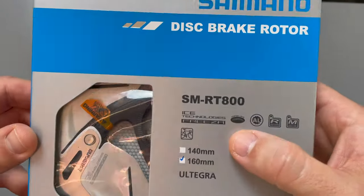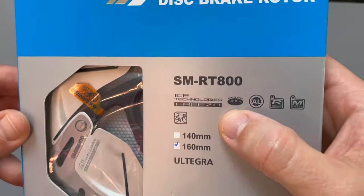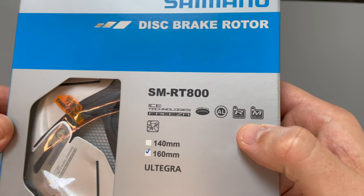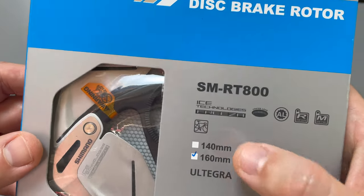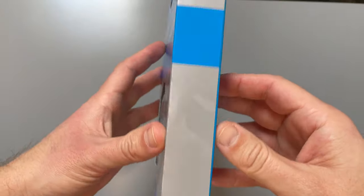First let's have a detailed look at the box. IceTek Freezer Technologies, the centre lock, aluminium cooling fins for resin and metallic pads and for drop bar bikes. I've purchased the pair at 160mm in size.